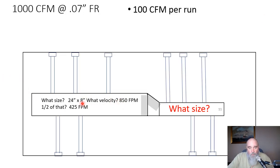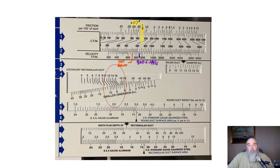So we got 24 by 8 duct, we were at 850 feet per minute moving through it. Half of that was 425. We knew after five branch runs it was time to reduce. So what size is the trunk that's going to carry our remaining five branch runs? Pretty simple. We line the 500 CFM up under my 0.07 friction rate that we calculated using the friction rate worksheet.